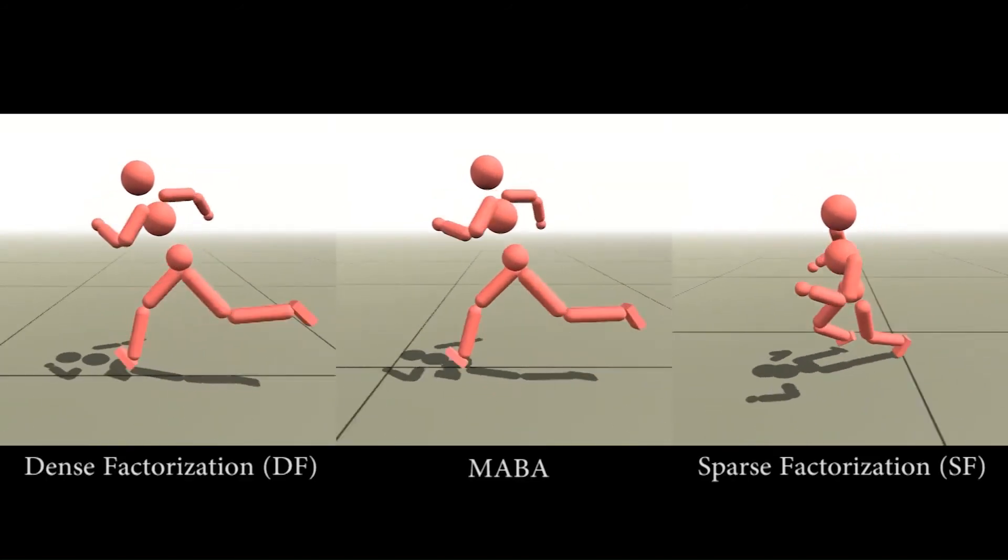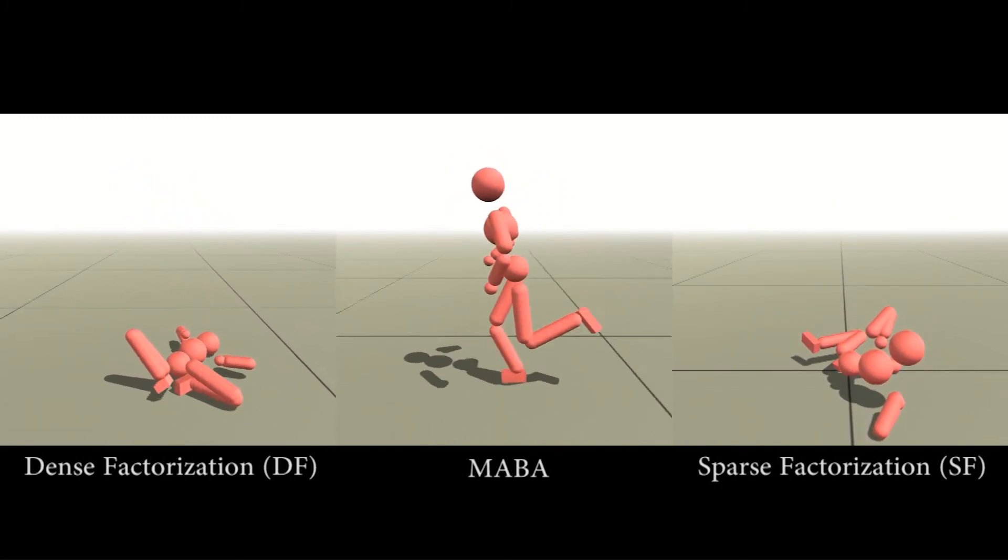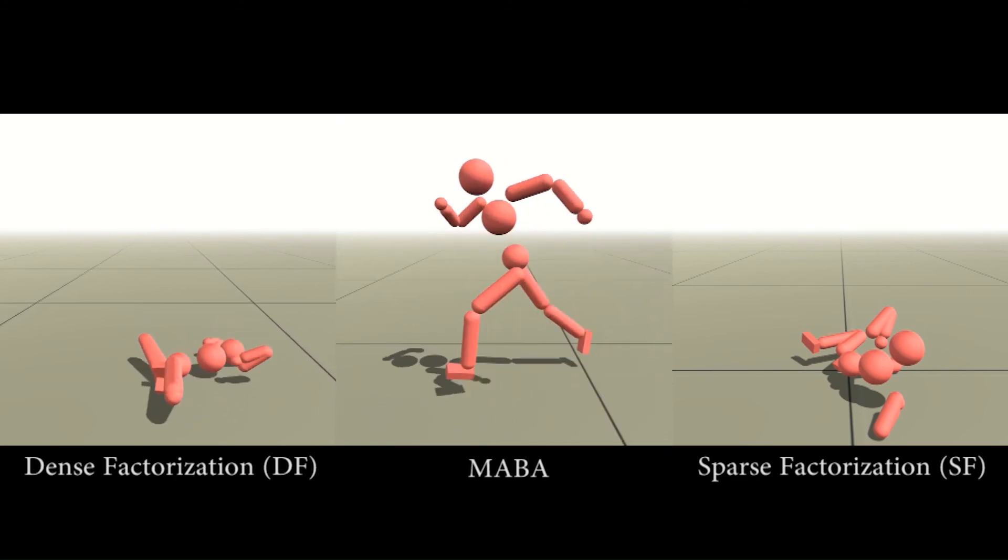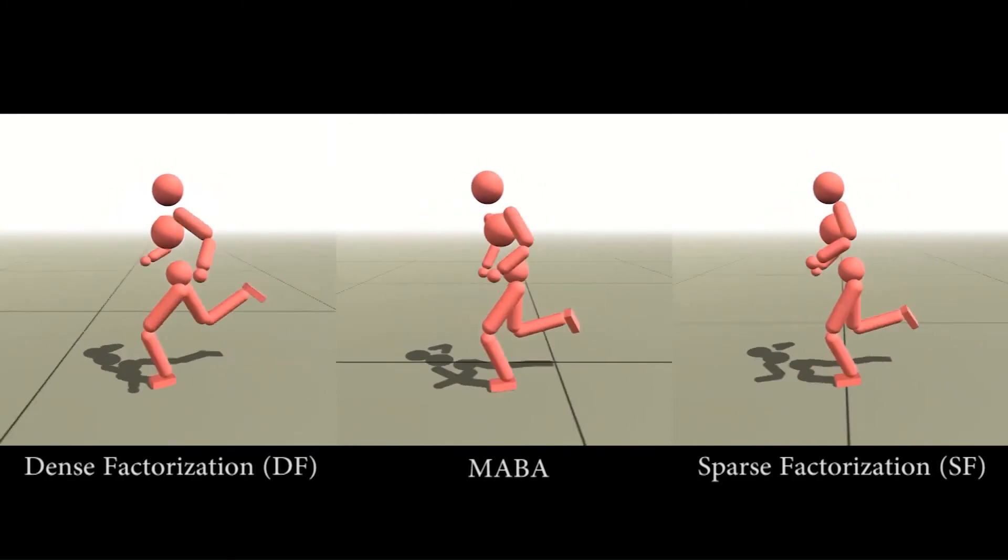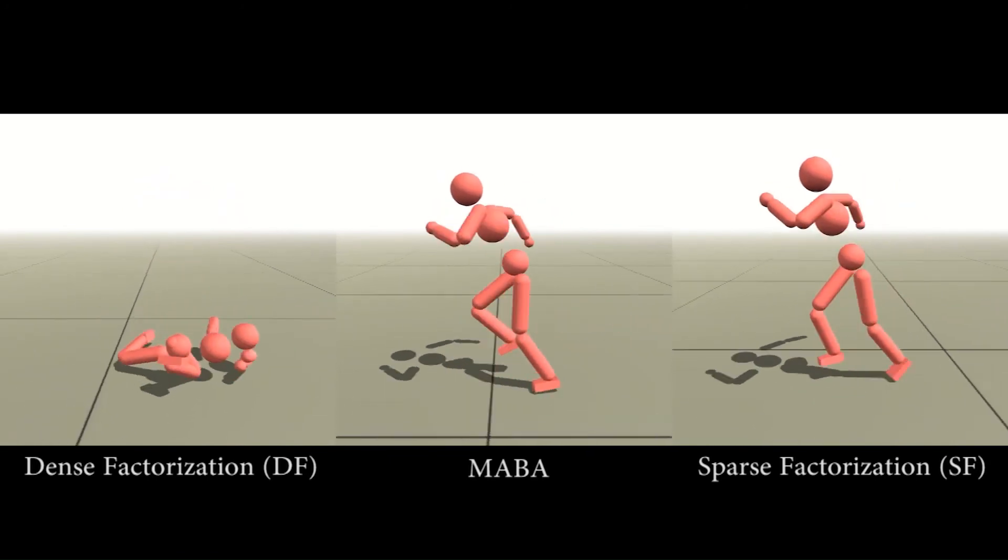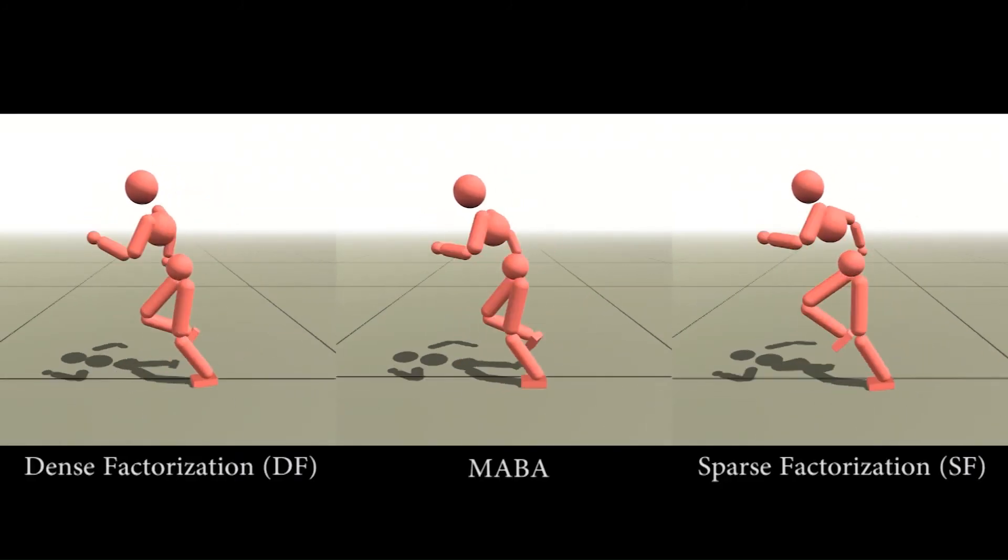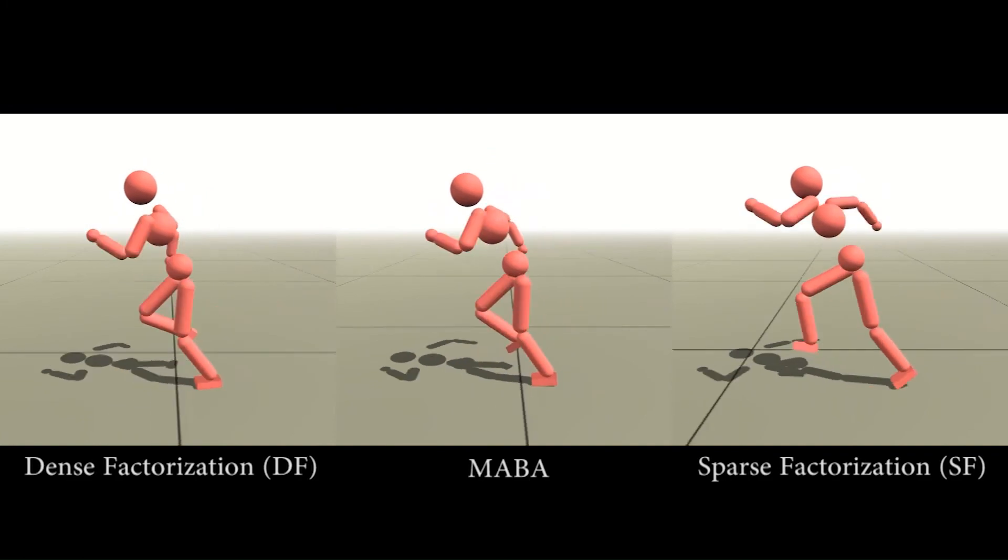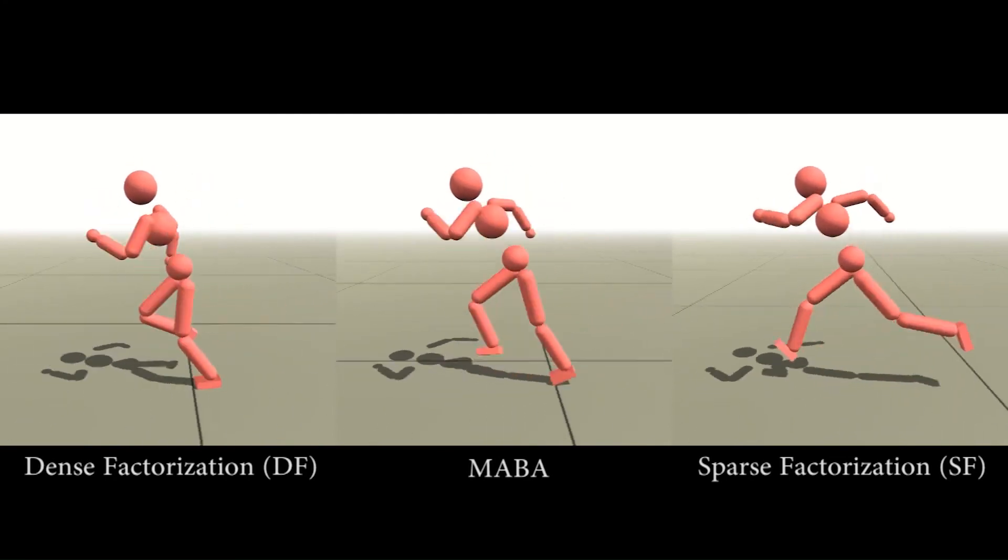Here we visualize intermediate training results under different SPD implementations. Within the same amount of training time, character trained with MABA lives longer and gets more rewards. We show the results of the same experiment on the dog model.